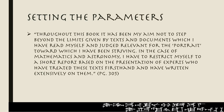Oppenheim opens with a statement that I think is absolutely essential. If you get nothing else out of this video, then this quote and understanding what it means and applying it to your scholarship — I will die a happy person. He writes: 'Throughout this book it has been my aim not to step beyond the limits given by texts and documents which I have read myself and judged relevant for the portrait toward which I have been striving. In the case of mathematics and astronomy I have to restrict myself to a short report based on the presentation of experts who have treated these texts firsthand and have written extensively on them.' In other words, I don't have expertise on this, and I'm not going to say more than I can. I'm going to intentionally restrict myself and rely on people that have expertise in these fields.